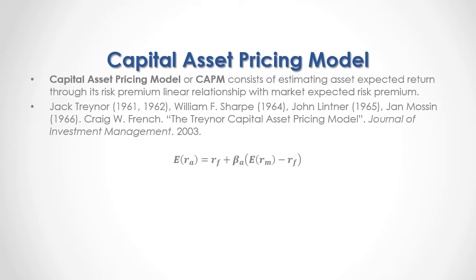As a formula, the expected asset return is equal to the risk-free rate of return plus the asset beta — which corresponds to the linear relationship between asset and market risk premiums — multiplied by the expected market return minus the risk-free rate of return.